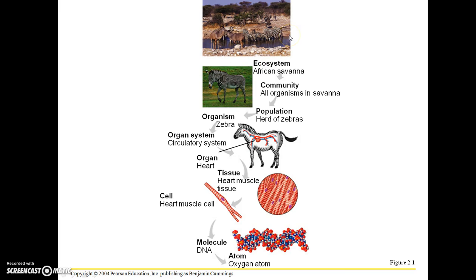Here is a visual example of what I was talking about. We have an ecosystem being an African savanna. You can look at the community level, consisting of all organisms in that savanna. You can look at a specific population, which would be a herd of zebras. You can look at an individual organism, the zebra itself. And you can continue to trace life down to the molecular level, which would be DNA.